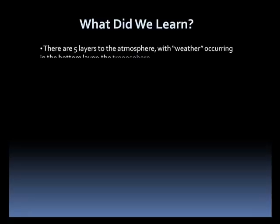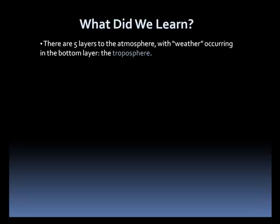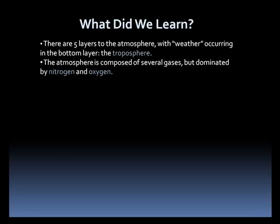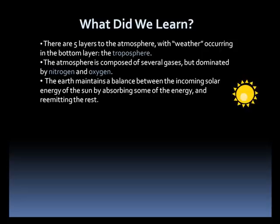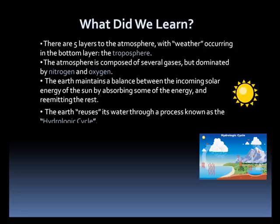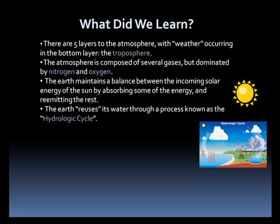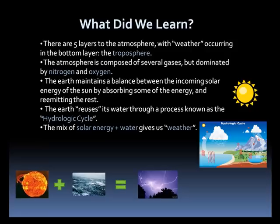What did we learn? Well, there are five layers to the atmosphere, with weather occurring in the bottom layer, the troposphere. The atmosphere is composed of many gases, but dominated by nitrogen and oxygen. The Earth maintains an energy balance with the incoming solar radiation by absorbing, emitting, or reflecting back this energy. The Earth recycles its water through a process called the hydrologic cycle. When we mix the solar energy together with water, it gives us weather.